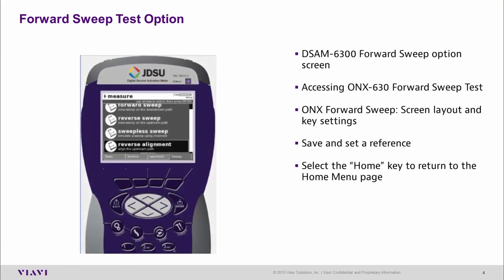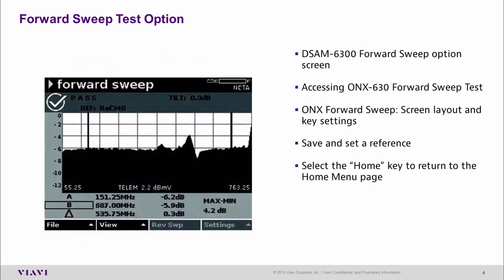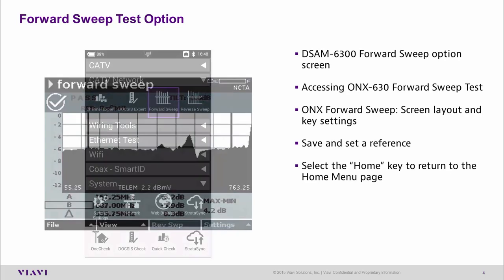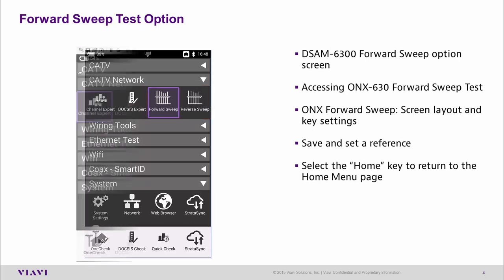DSAM 6300 users would launch sweep options from this screen and typically we would see this type of results. Sweep testing can be found under the CATV network option. We can now see forward and reverse sweep options available — simply select the test and hit enter or tap the screen.